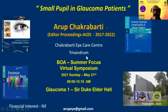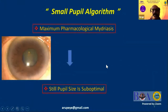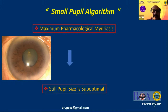Good morning friends, and thanks a lot to Manish and the organizing team for having me here today. The first approach in managing any small pupil situation is to achieve maximum pharmacological mydriasis. In certain situations the pupil size is still small or sub-optimal, and we need to think about alternate strategies to have a larger pupil to make the subsequent cataract surgery safer for the patient as well as for the surgeon.